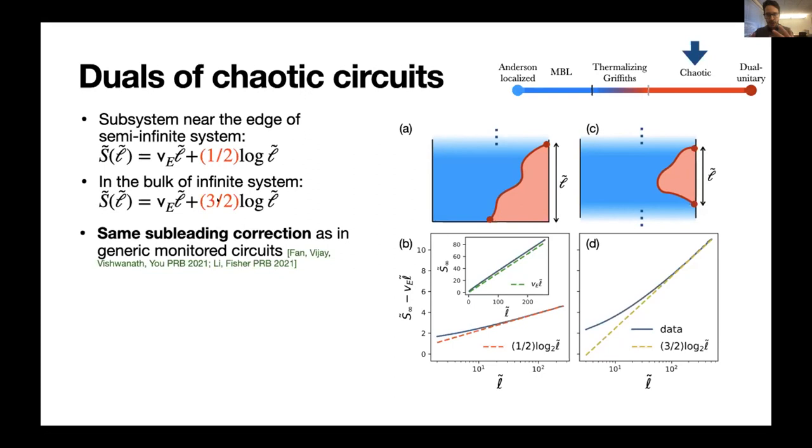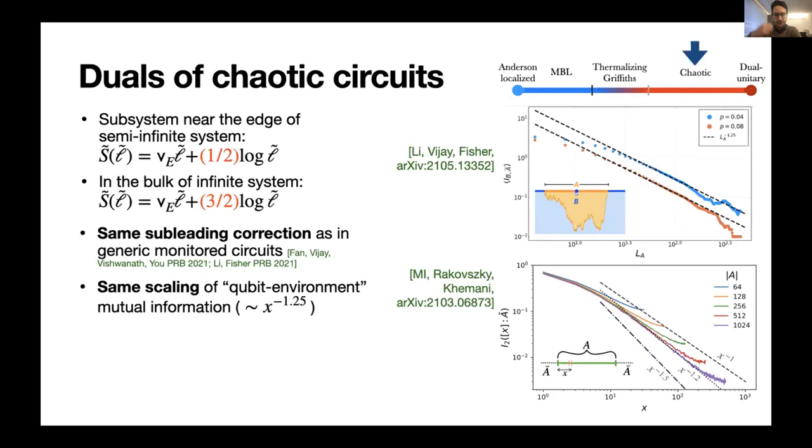So you might ask, is this indeed the same phase or not? And to try and attack this question, we've looked at a more sophisticated diagnostic, which is mutual information between some single qubit and its environment. So you take a subsystem A, take a qubit inside it, and look at mutual information between B and whatever is outside of this subsystem A, and see how it scales as you move the qubit around. And here we can compare our results on dual chaotic circuits to what is found in unitary measurement ones, and indeed this has the same power law scaling shown here.